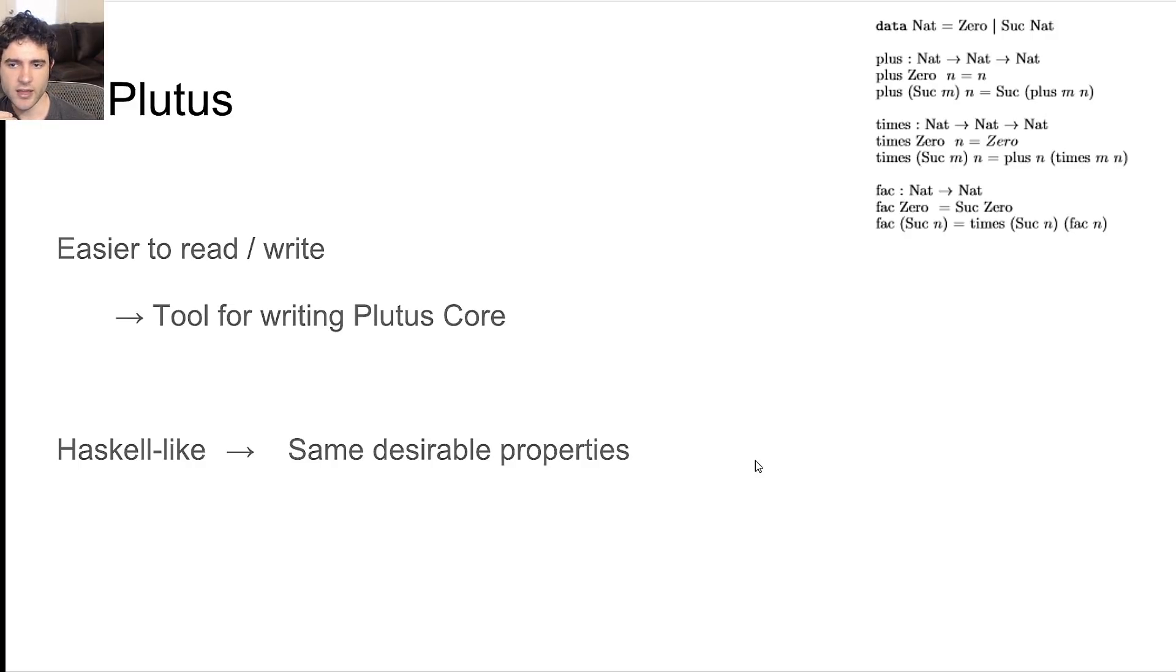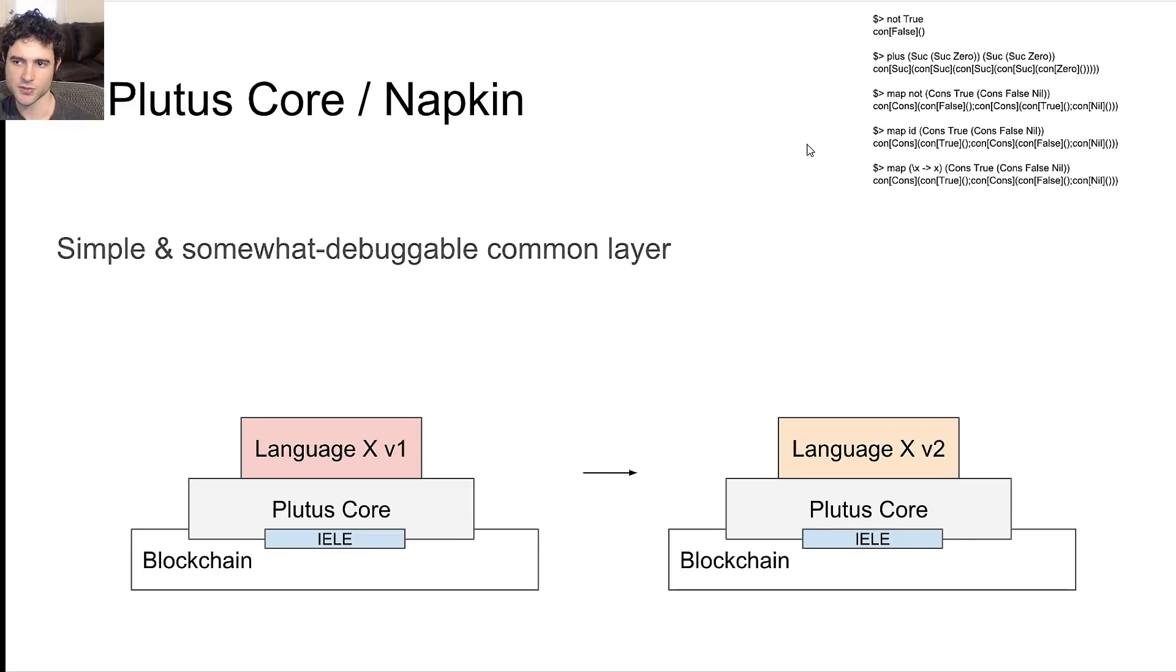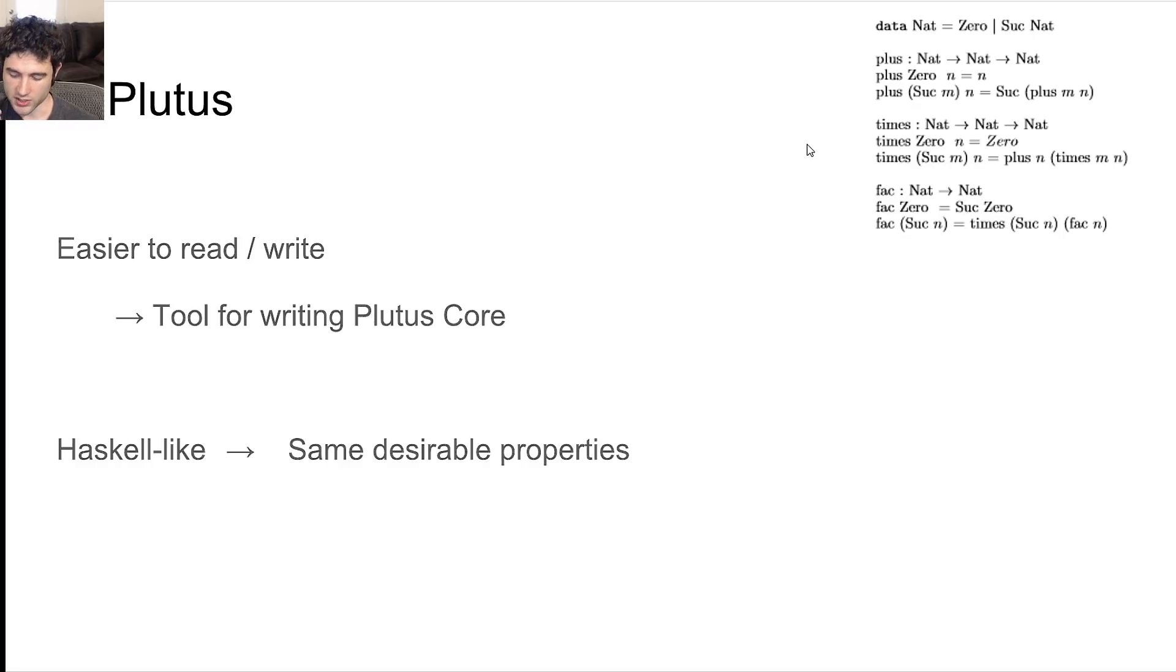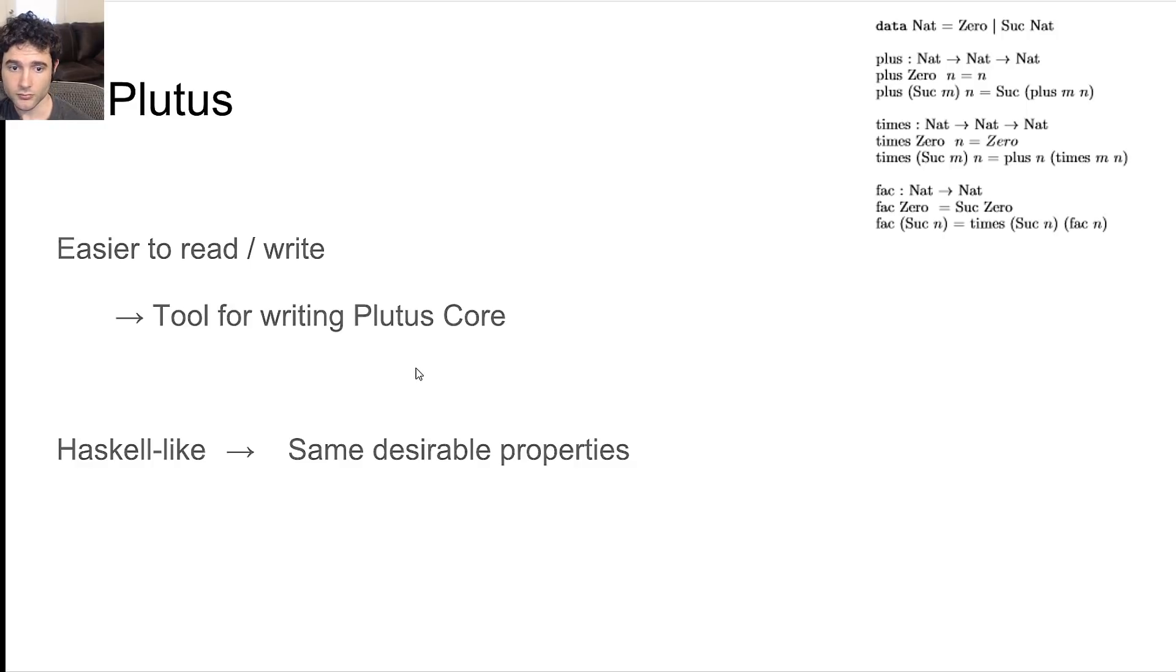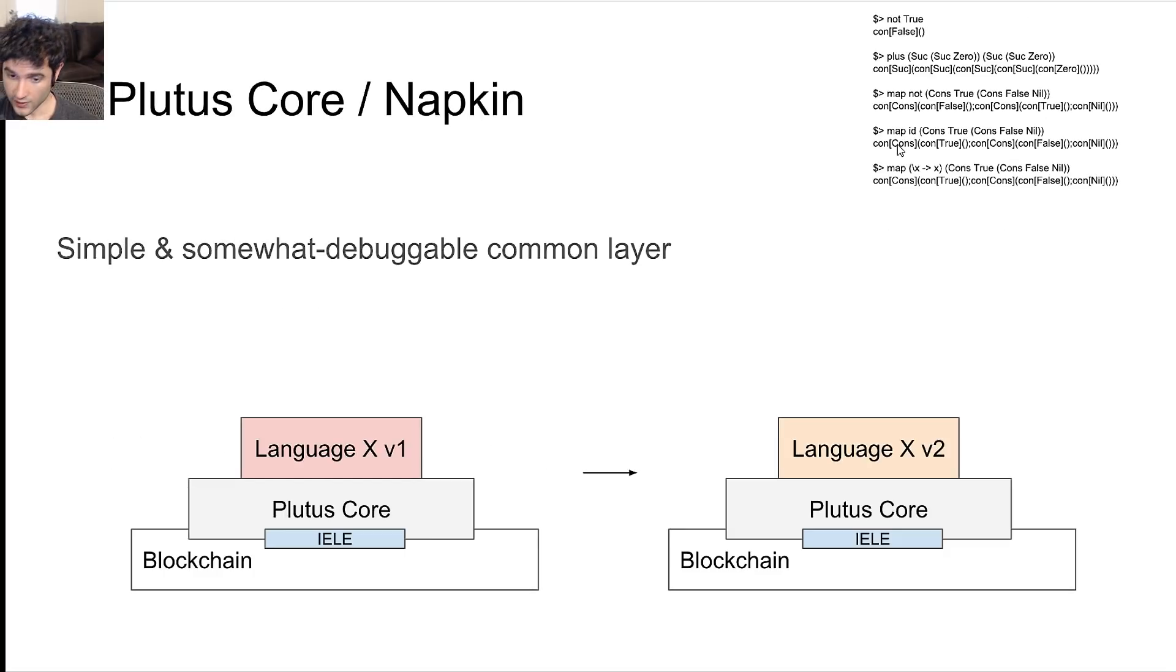And then on top of this you now have a language called Plutus, which looks like this. Plutus Core is not really something humans are supposed to write. Plutus is the language people are supposed to write, which runs on top of Plutus Core. In this example, language X would be Plutus. It's a Haskell-like language. If you know Haskell you'll notice this is extremely similar. And so it gives you some of the same desirable properties while still fixing some of the language flaws with Haskell, also creating a simpler programming language, and also taking into account the gas model and the security guarantees because we built it up through our stack.